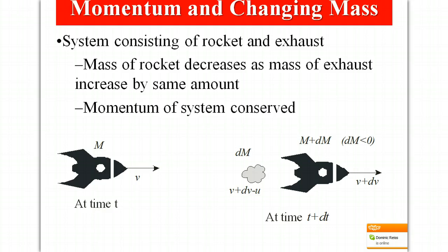While the total mass of the system remains constant, the mass of the rocket actually is changing and the result of all of this is that the rocket experiences a thrust.